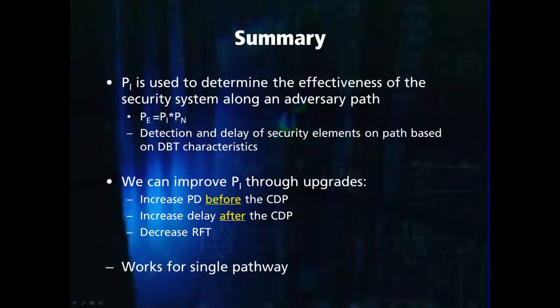In summary, the probability of interruption is used to determine the effectiveness of the security system along with the probability of neutralization. We quantify it using detection and delay elements of the security system as well as characteristics in the design basis threat. The probability of interruption can be improved in a number of ways: by adding or improving detection before the critical detection point, increasing delay after the critical detection point, or decreasing the time it takes for the response force to respond. The analysis techniques presented here analyze a single pathway. For a facility, there are a number of possible pathways that must be analyzed simultaneously. The technique for doing this will be introduced in the next section. However, the pathway analysis techniques presented in these slides are the basic concepts used when doing a multipath analysis.